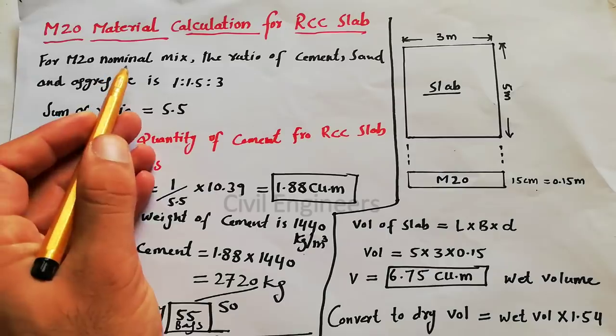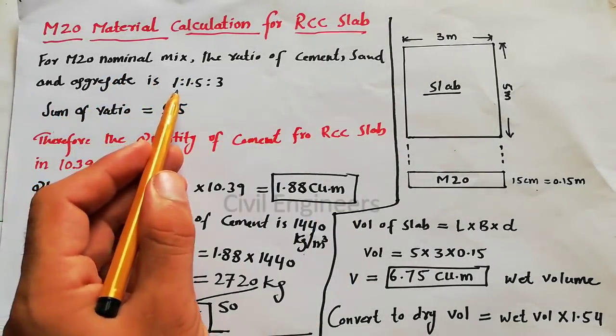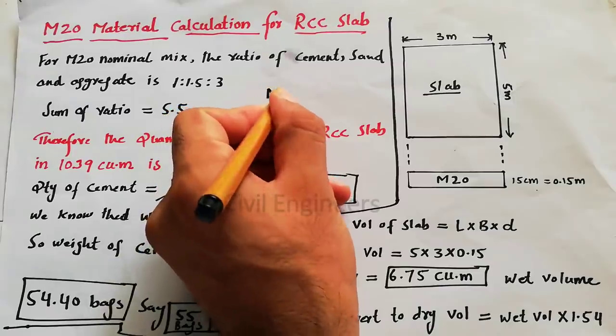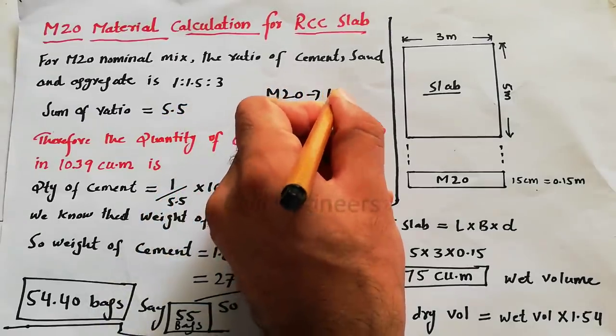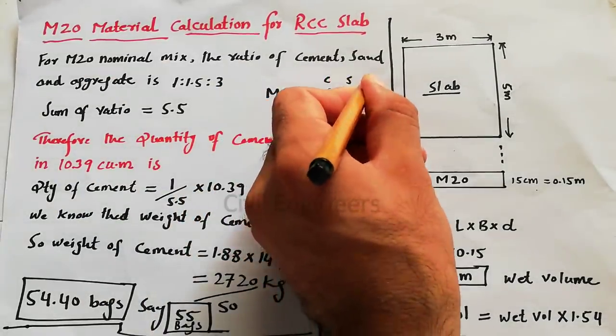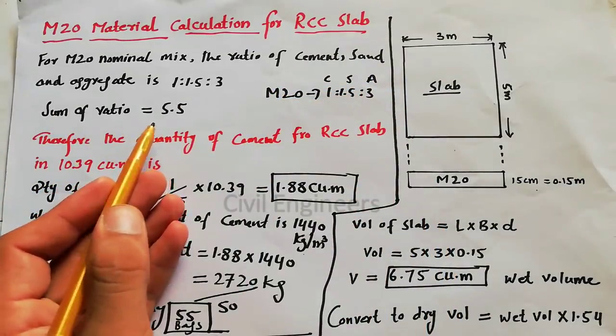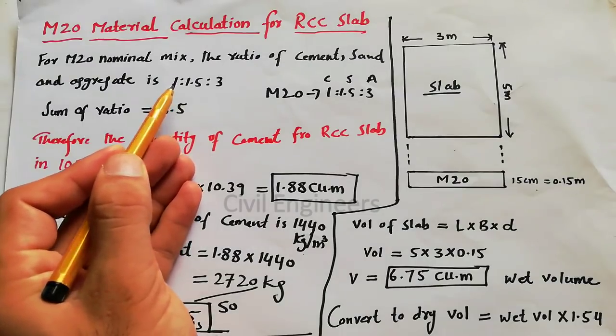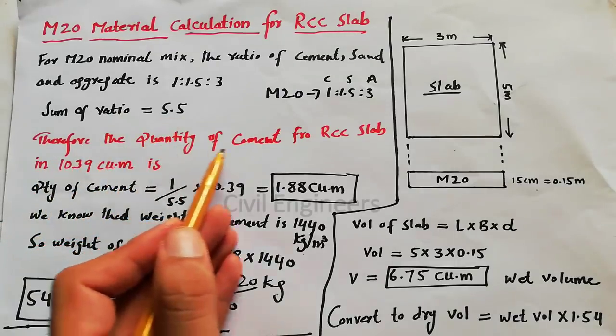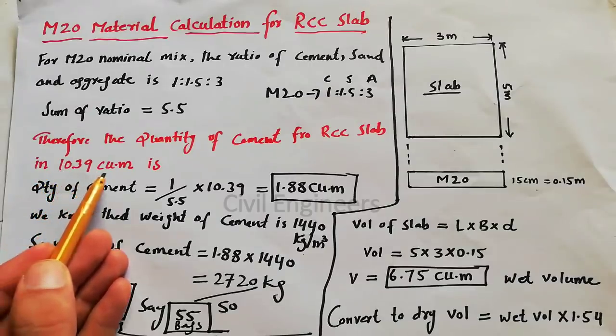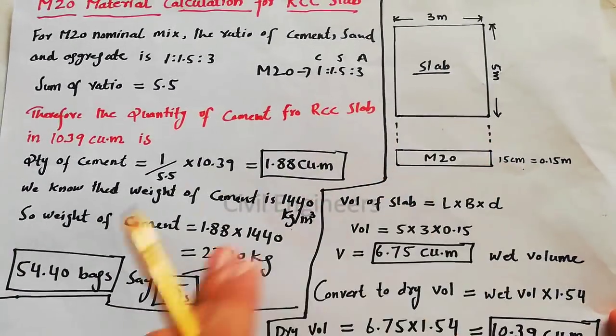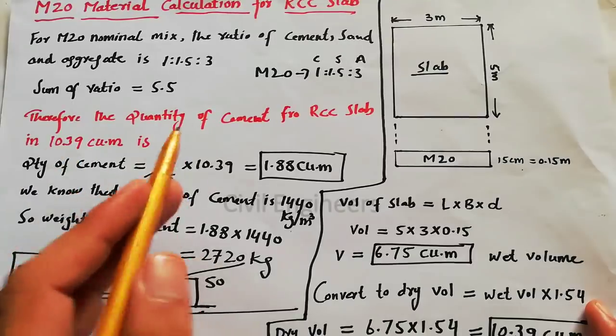For M20 nominal mix, the ratio of cement, sand, and aggregate is 1:1.5:3. M20 ratio is 1:1.5:3, where 1 is cement, 1.5 is sand, and 3 is aggregate or crush. Sum of ratio becomes 5.5 when we add them together. Therefore, quantity of cement for RCC slab in 10.39 cubic meter. This is dry volume.